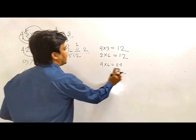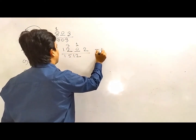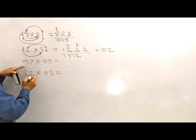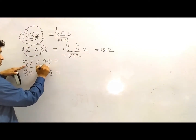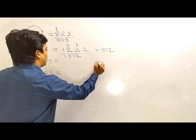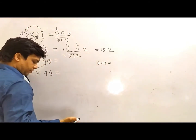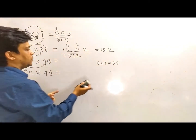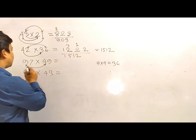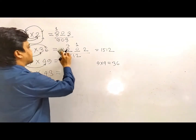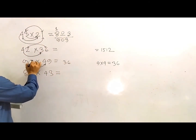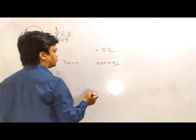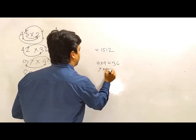2 times 6 is equal to 12. 12 times 2 is equal to 12. 1 times 6 is equal to 24. 2 times 3 is equal to 6. 3 times 3 is equal to 12. So we will finally answer. Next: 97 times 49. I will do it again.